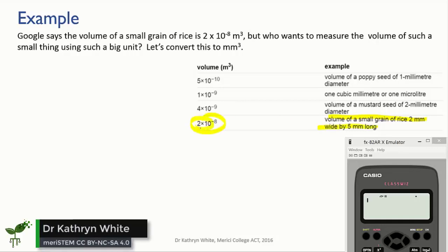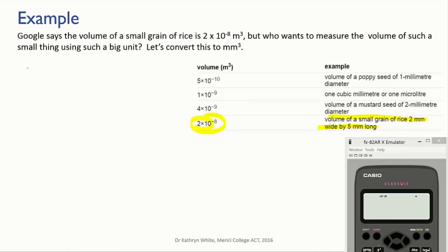Google says that the volume of a small grain of rice is 2 times 10 to the minus 8 meters cubed. But who wants to measure the volume of such a small thing using such a big unit? Let's convert this value into millimeters cubed.